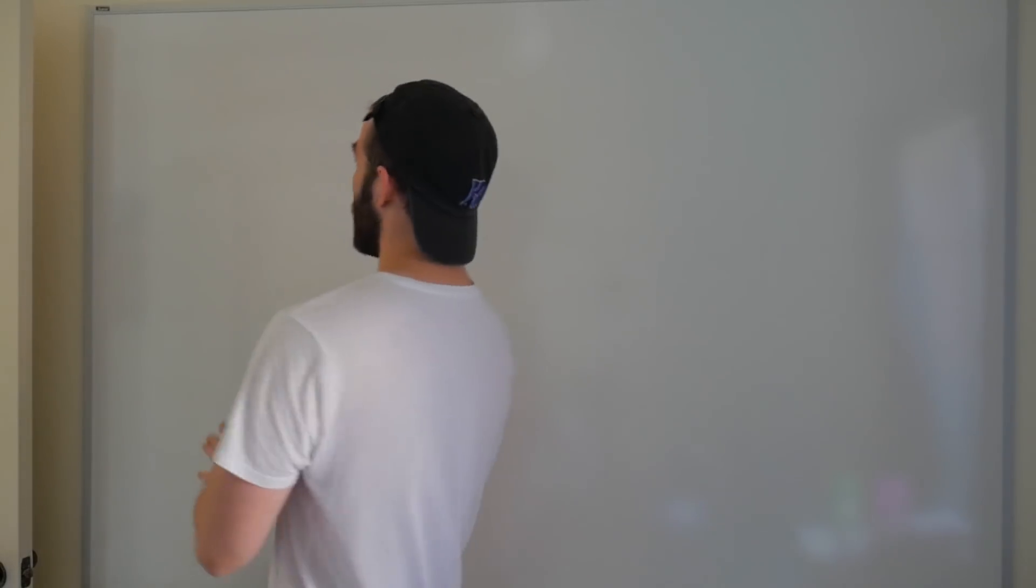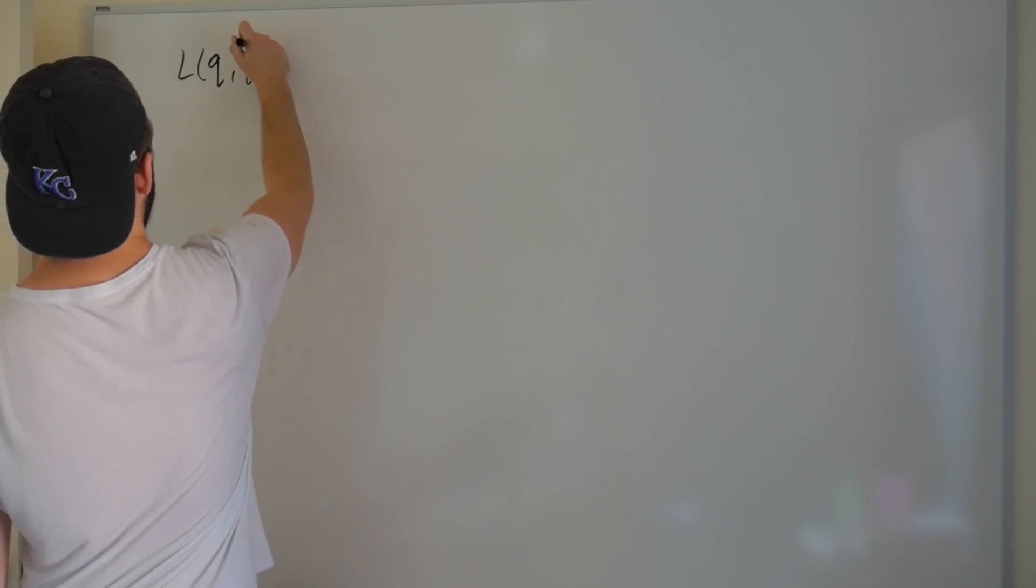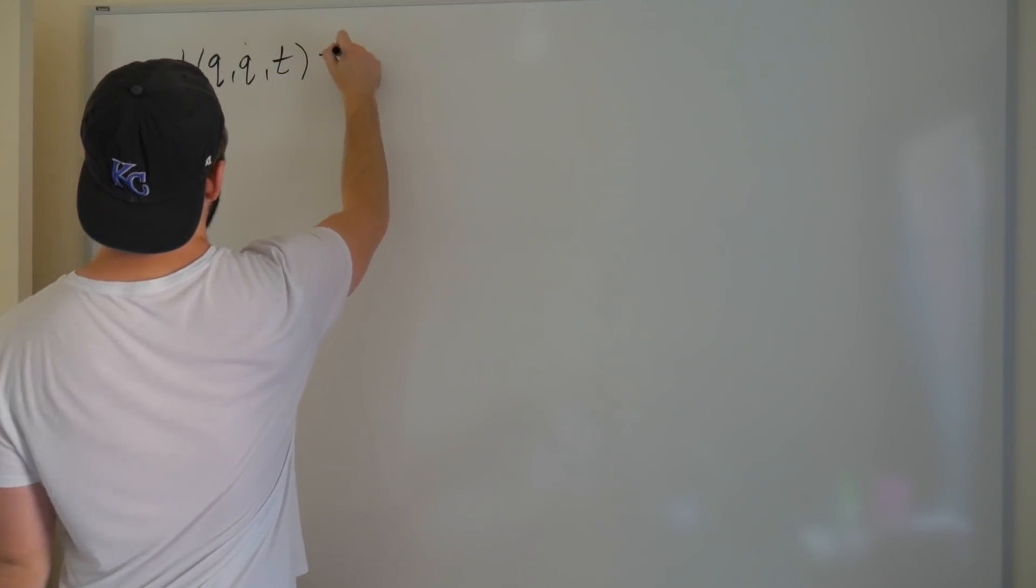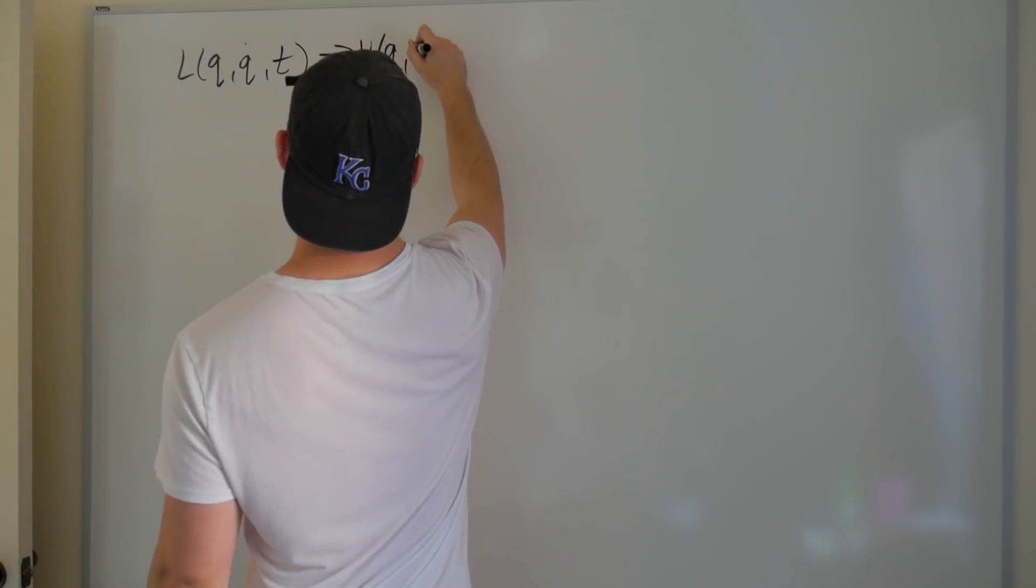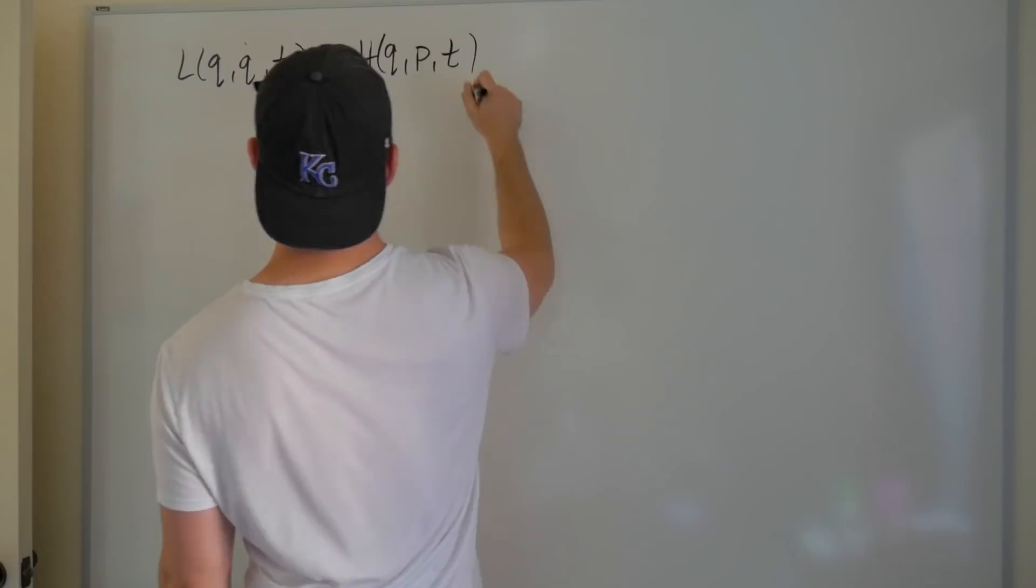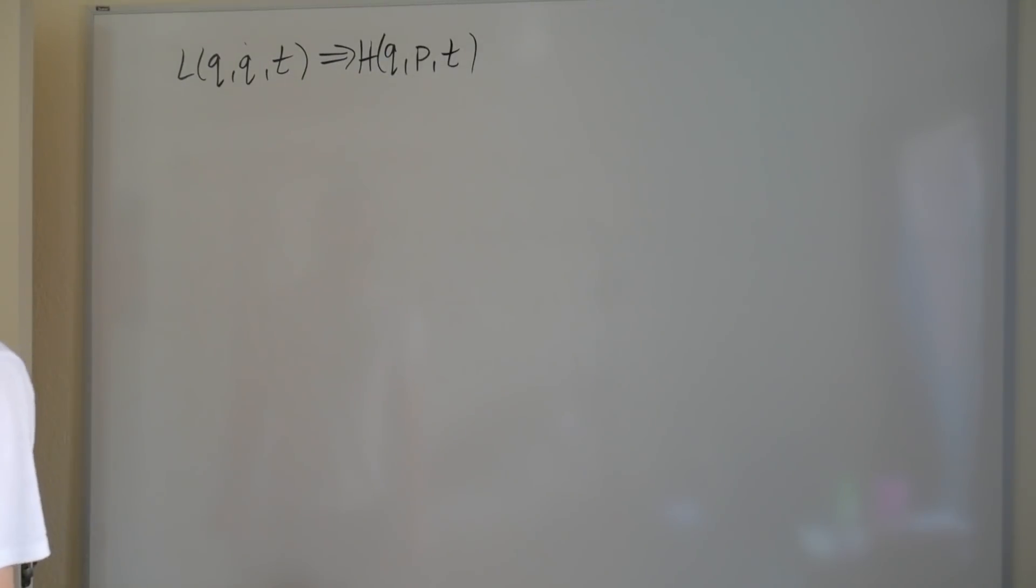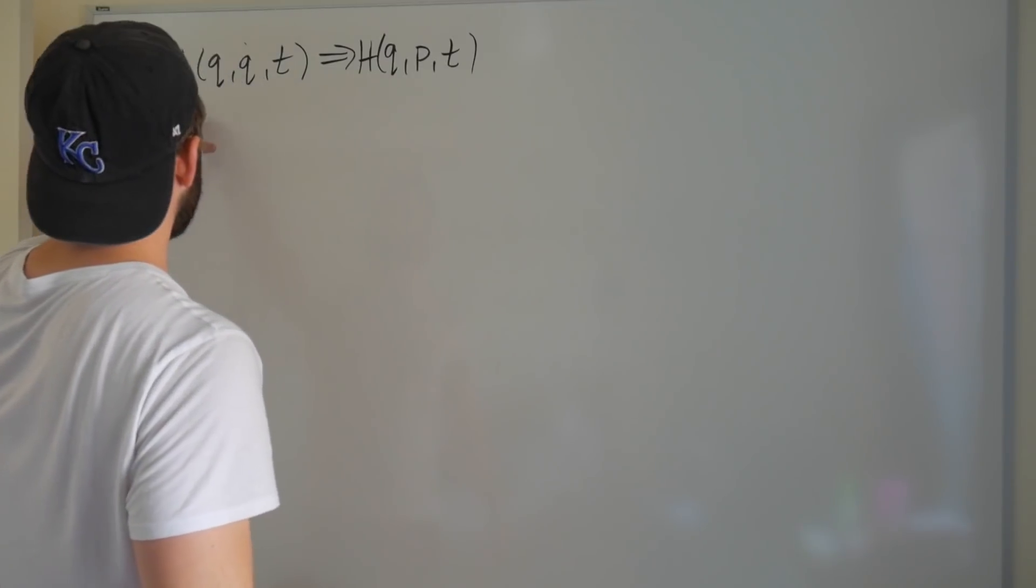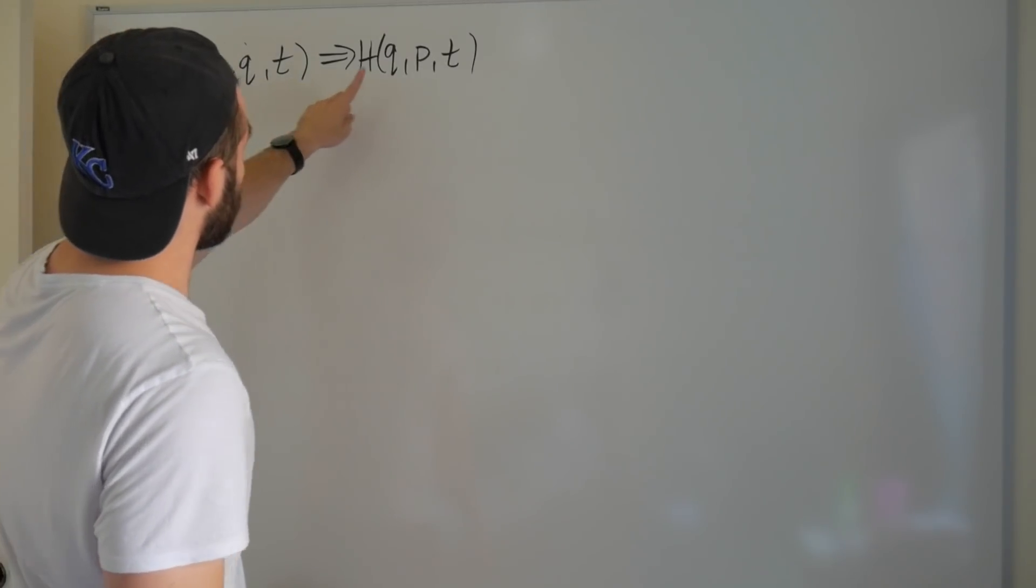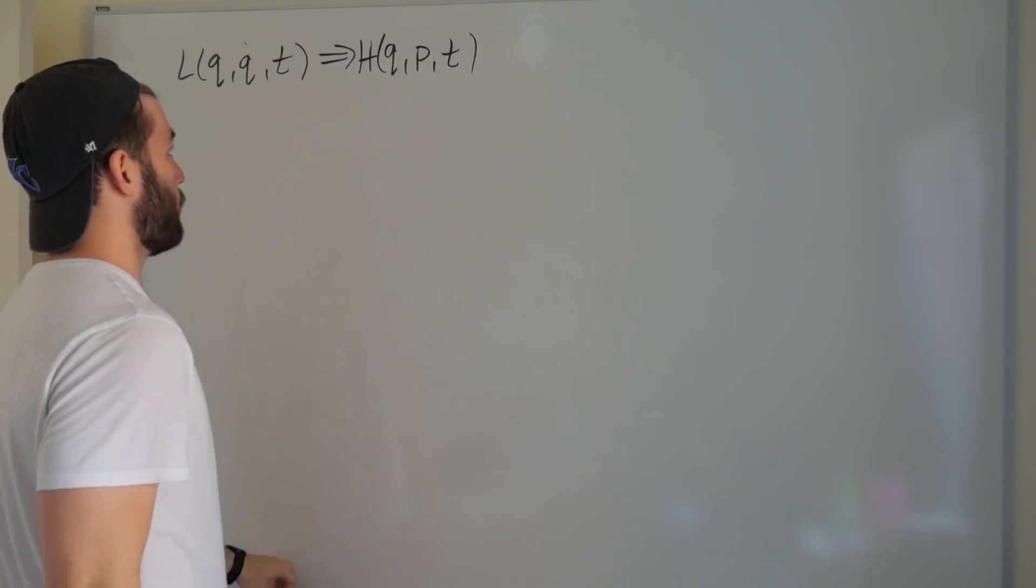Let's put that on the whiteboard. So let's say that L depends on Q, Q dot, maybe T. And H depends on Q, P, T. So the trick here is to mind your P's and Q dots. The connection between the two is going to be a Legendre transform that transforms this Q dot into a P. But we'll get to that when we get to that.